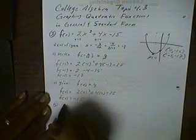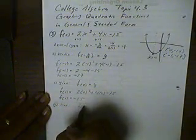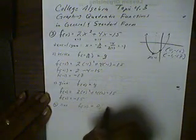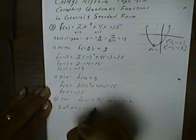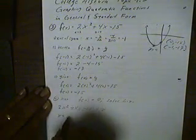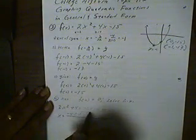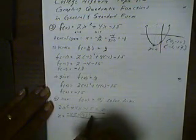Finally, our x-intercepts are found by taking the function, setting it equal to 0, and solving for x. Our function is 2x squared plus 4x minus 15, set equal to 0. This doesn't factor, so we'll use the quadratic formula: the opposite of b, which is negative 4, plus or minus the square root of b squared (4 squared) minus 4 times a (which is 2) times c (which is negative 15), all over 2 times 2.